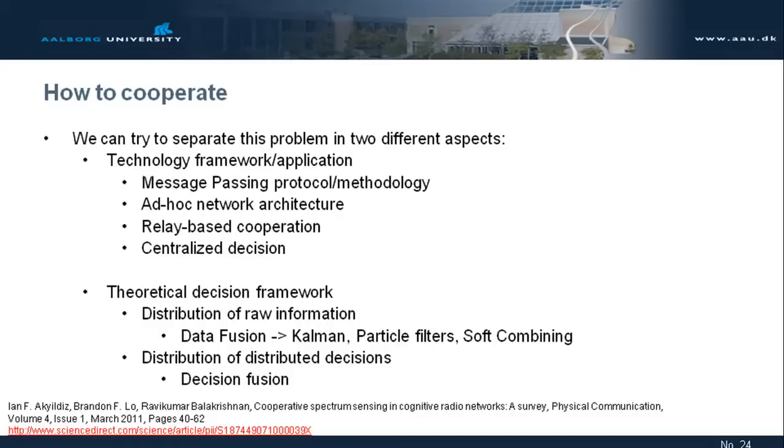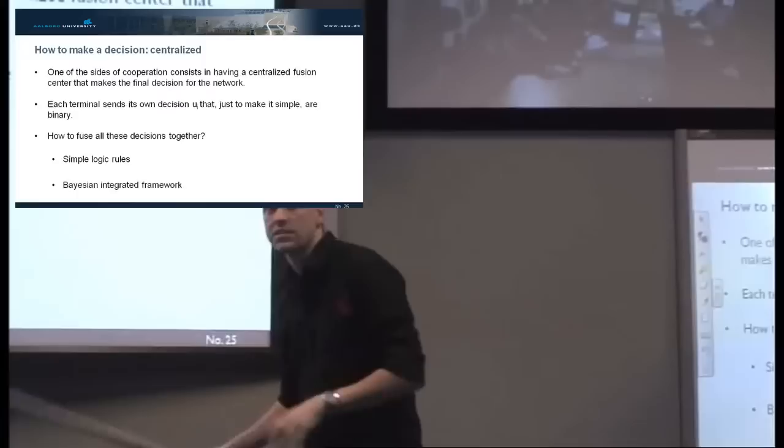And the other part is the theoretical decision framework, so how I make a decision, not only how I share information, but also how I make a decision. Because, if you look, I can use data fusion in the sense that I take the raw information from different sources, I blend it all together, and then I make a decision. Or I make a decision fusion, meaning that every one of you guys make a decision on your own, you give everything to me, I make another decision, the final one, based on your decisions, and I give it back to you.